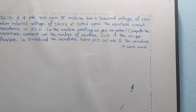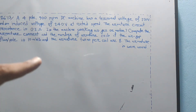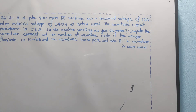The machine is a generator because the induced voltage of 240V is greater than the terminal voltage of 220V. This is a very easy answer — when induced EMF is greater than terminal voltage, the machine acts as a generator.